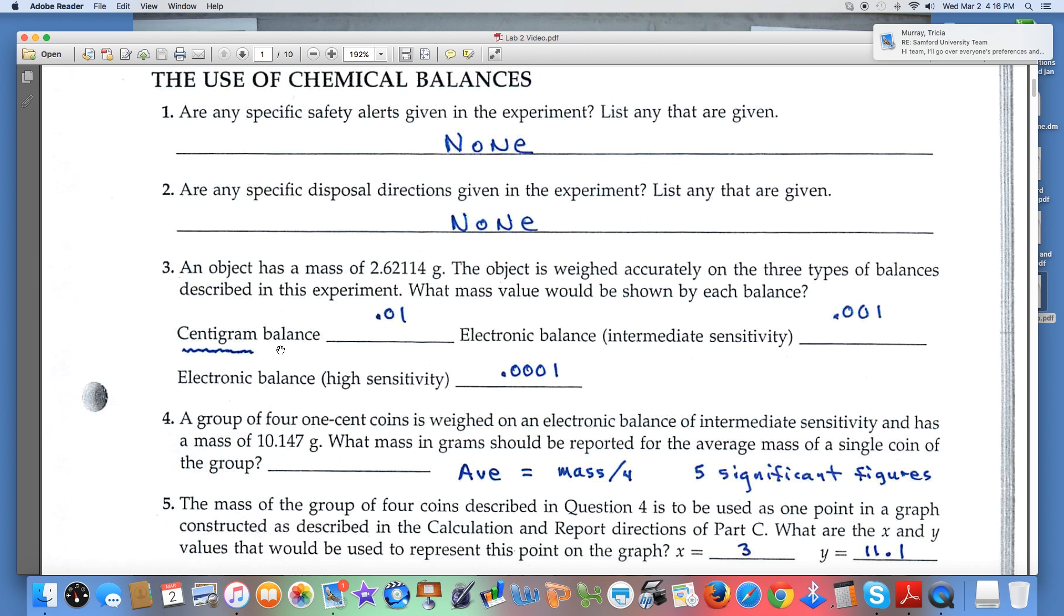When you look at centigram, I'd like you to sort of think of a dollar and one hundred cents. A centigram balance is always recorded to the hundredth. The electronic balance, we'd record that mass to the thousandth. The electronic balance of high sensitivity, you'd record the mass to the ten thousandth.